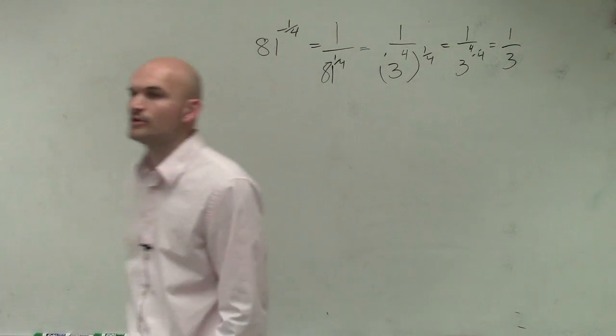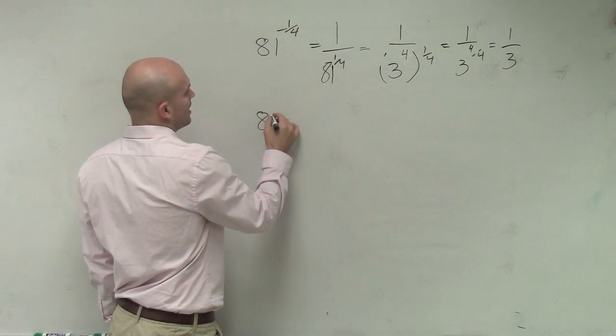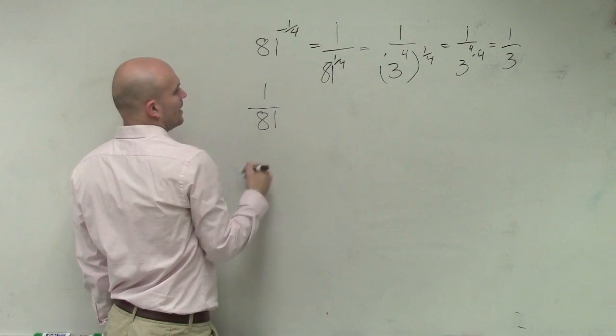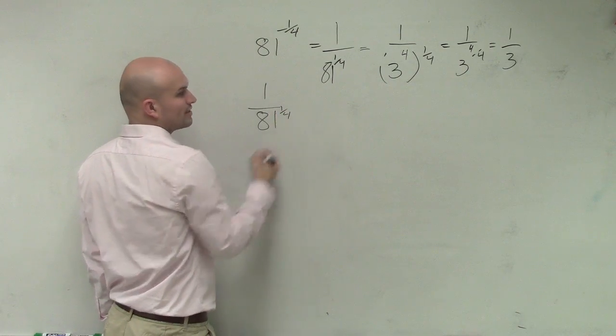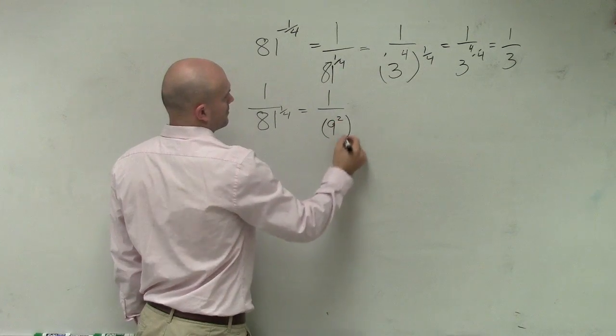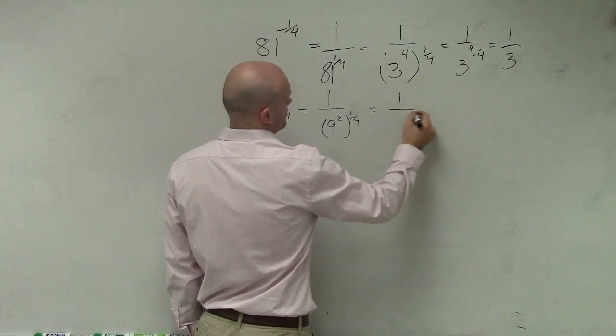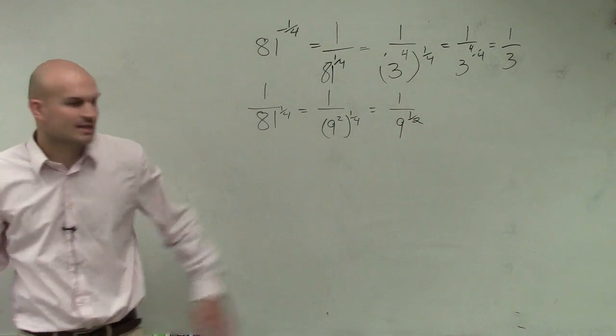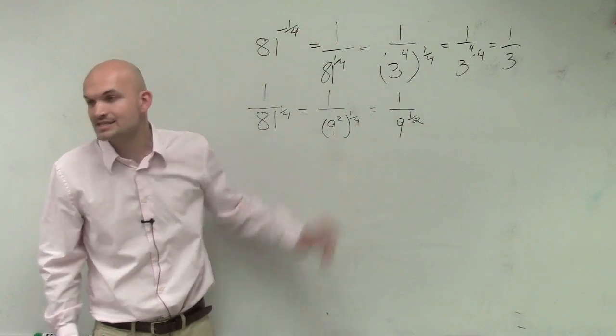Now, let's pretend we do it the other way. Let's say we have 1 over 9 squared to the one-fourth. If we do it the way you said, we have 1 over 9 to the one-half.